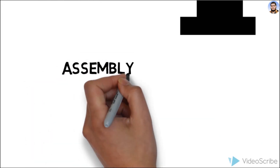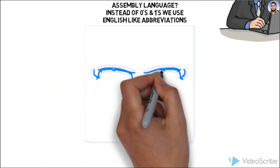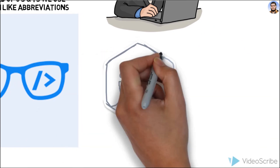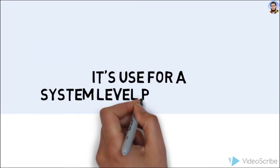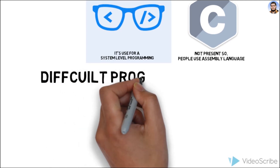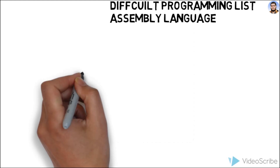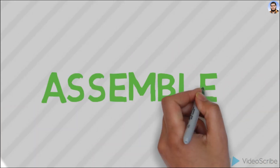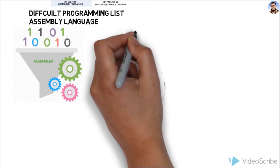Assembly language میں zeros and ones کی بجائے English-like abbreviations استعمال کی جاتی ہیں — یہ words actual instruction operations ہوتے ہیں۔ جب C language موجود نہیں تھی تو ہم assembly language استعمال کرتے تھے، یہ system-level programming کے لیے use ہوتی تھی۔ Assembly language کو بھی difficult language count کرتے ہیں۔ اس کے لیے جو translator use ہوتا ہے اسے assembler کہتے ہیں، جو assembly language کو machine-level language میں convert کرتا ہے۔